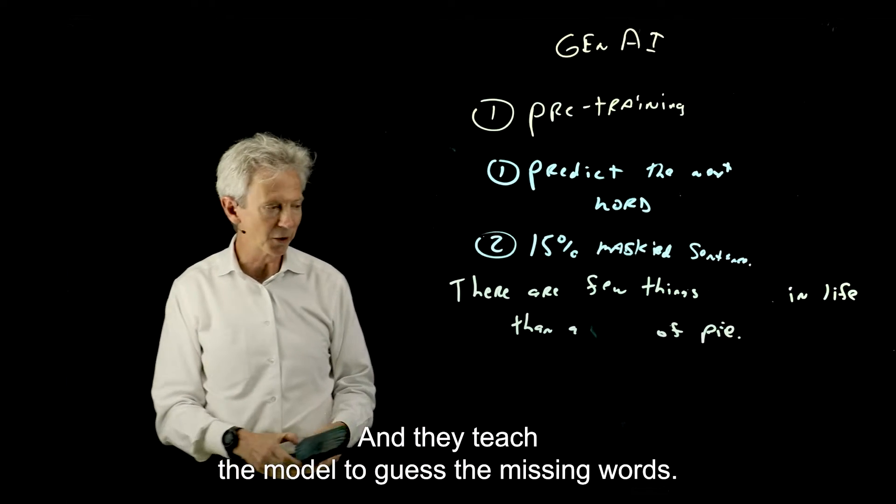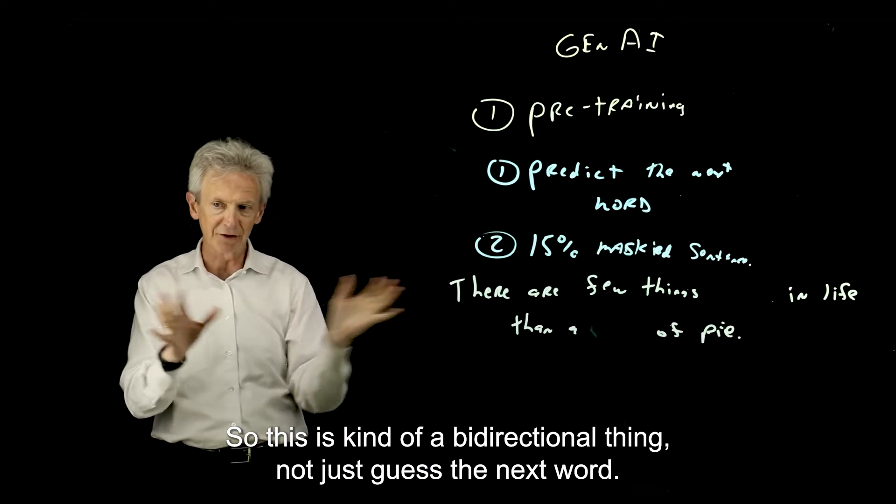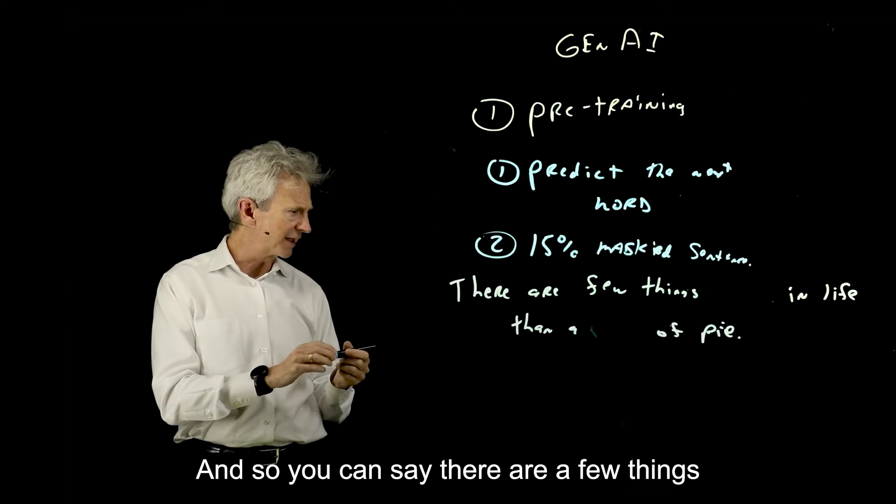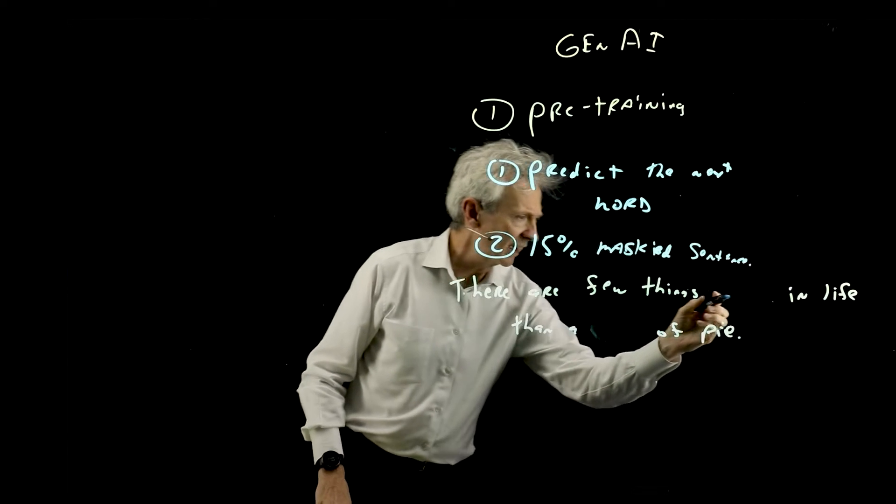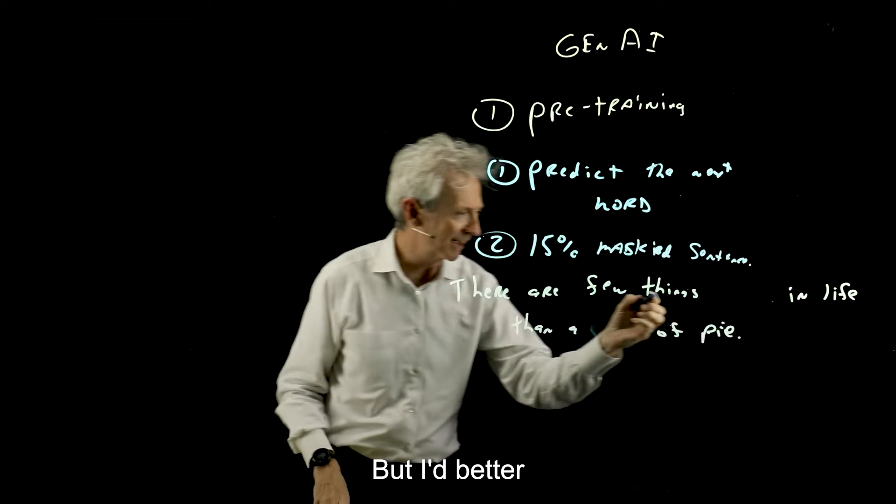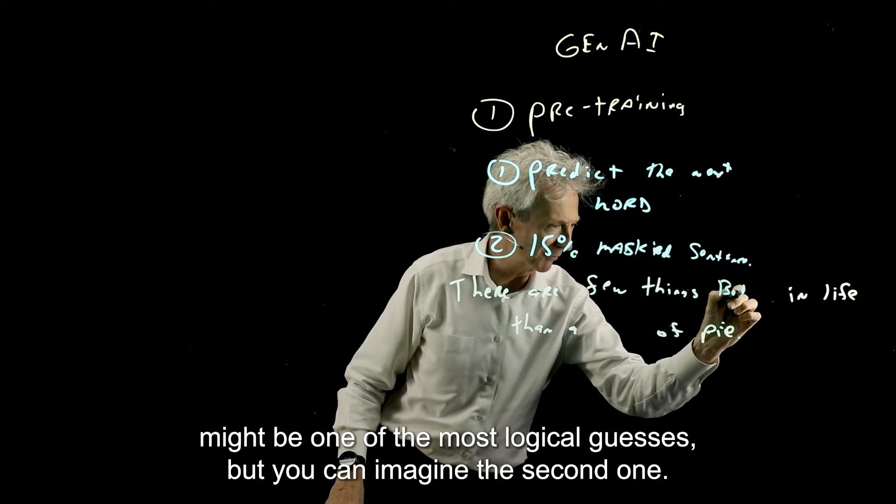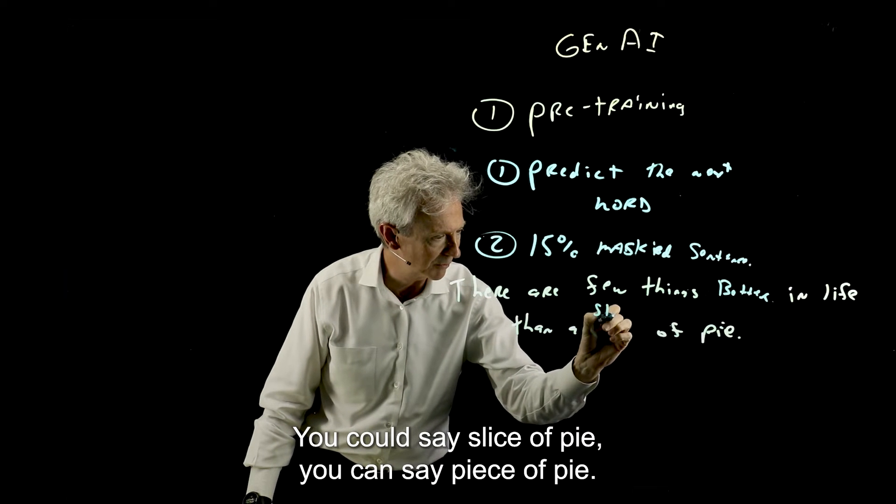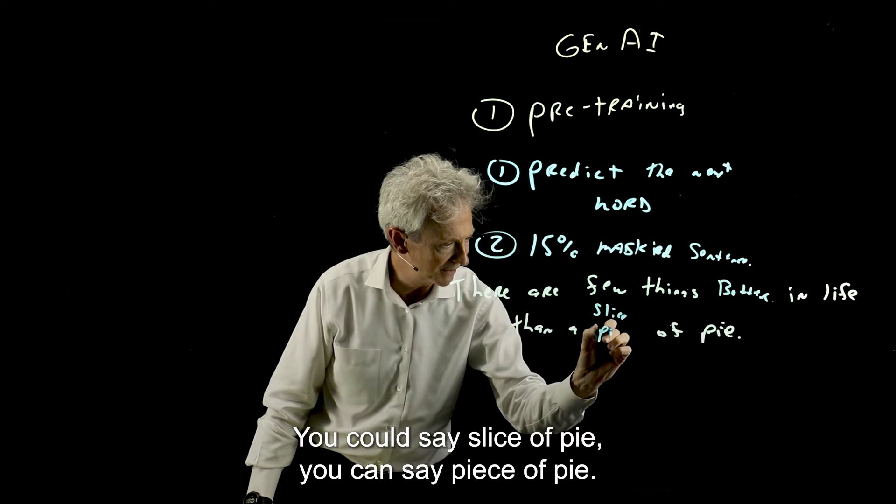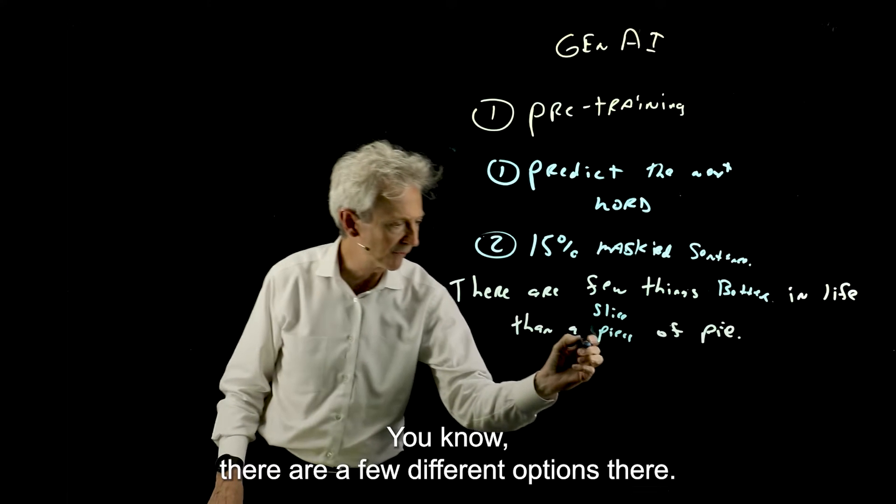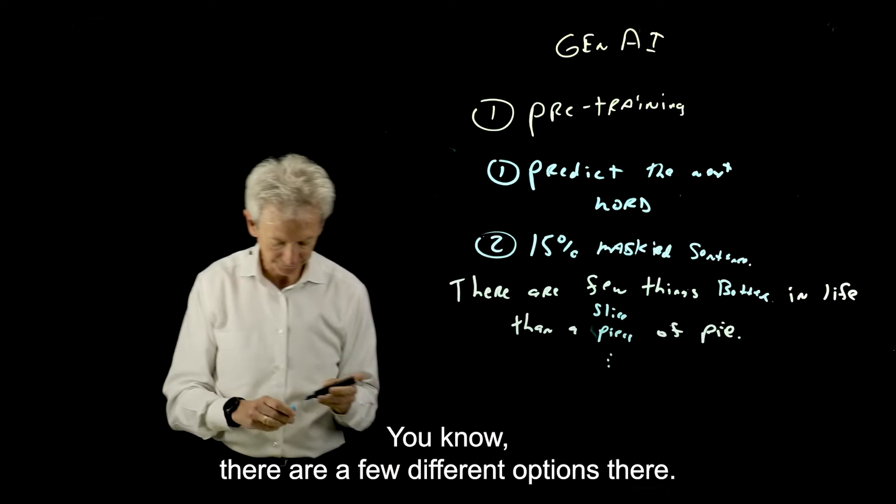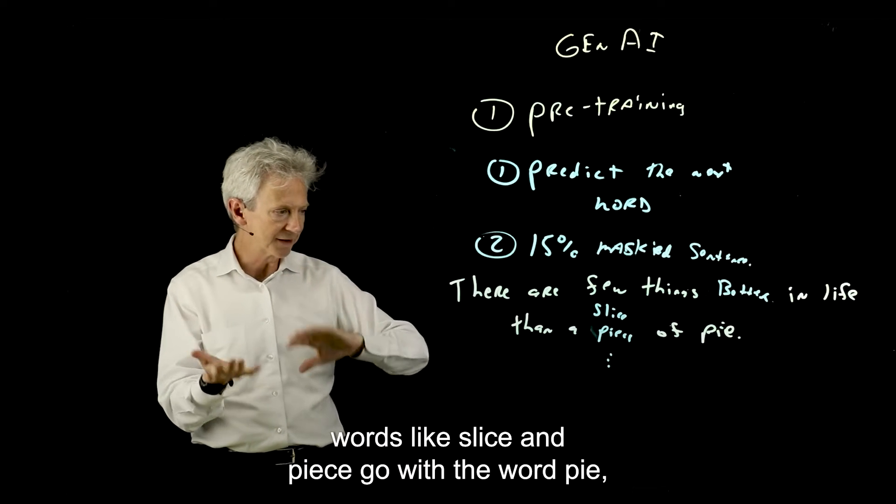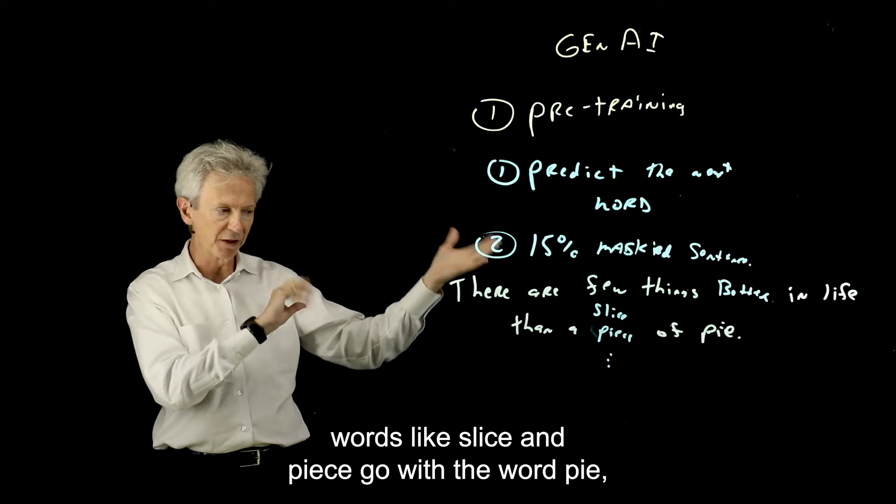They teach the model to guess the missing word. So this is kind of a bi-directional thing, not just guess the next word. You can see there are a few things more fulfilling, I guess, is two words. But better might be one of the most logical guesses. But you can imagine the second one, you could say slice of pie, you could say piece of pie. There are a few different options there.